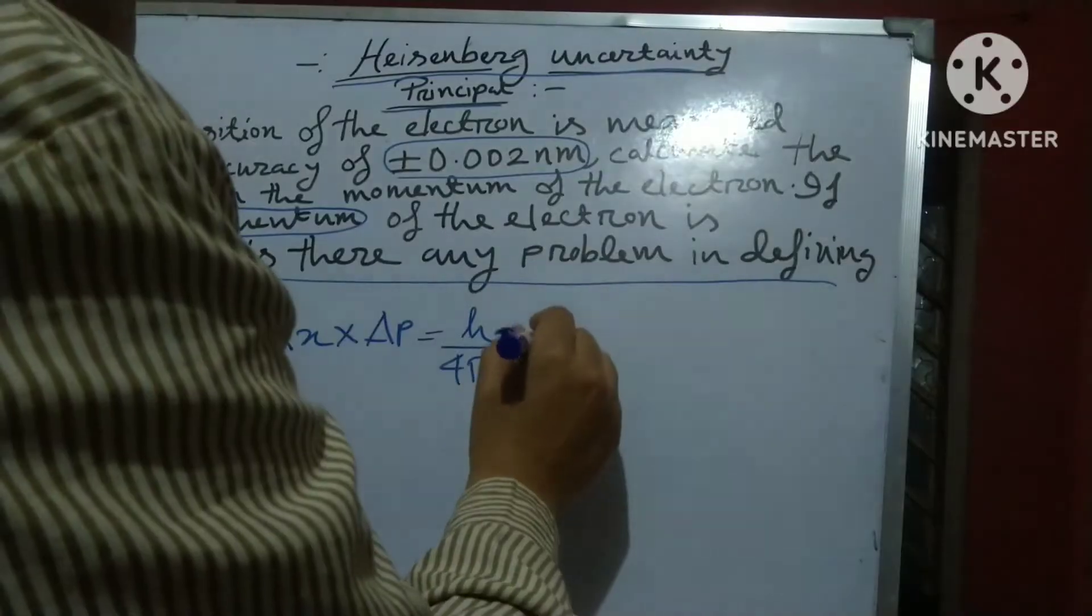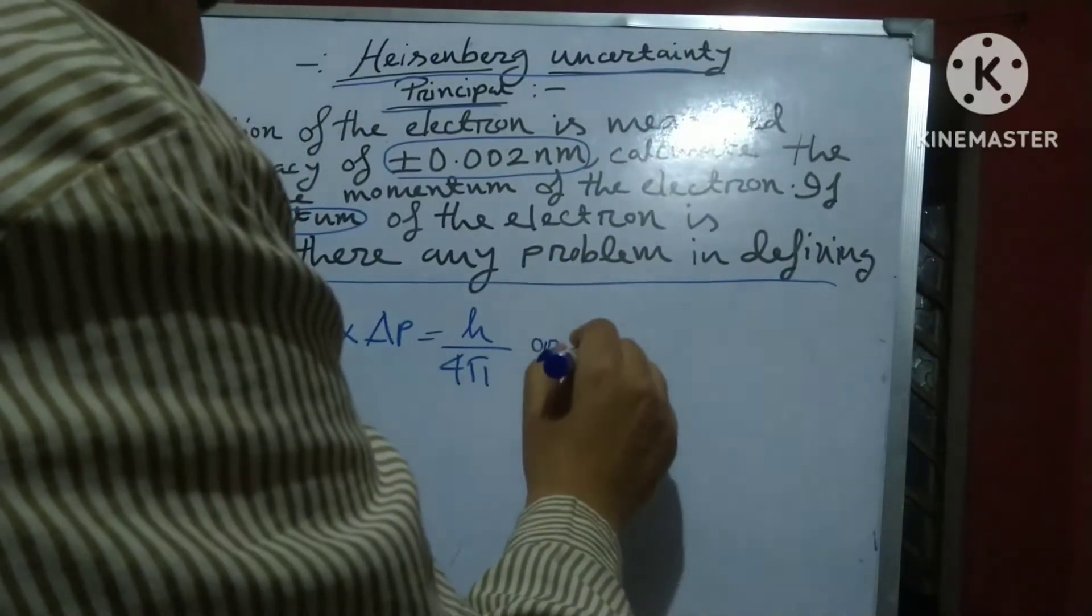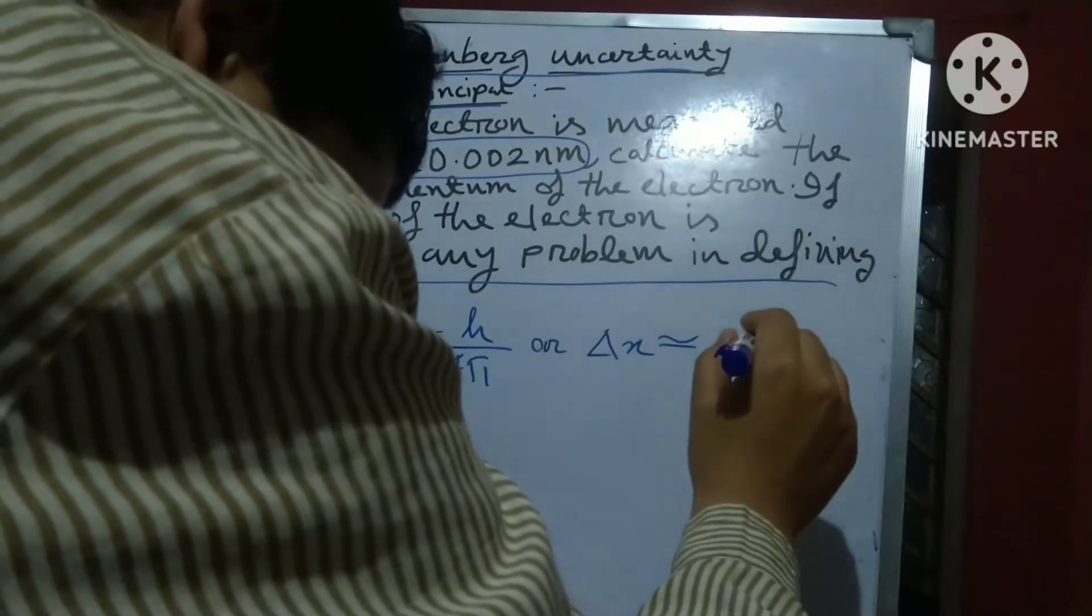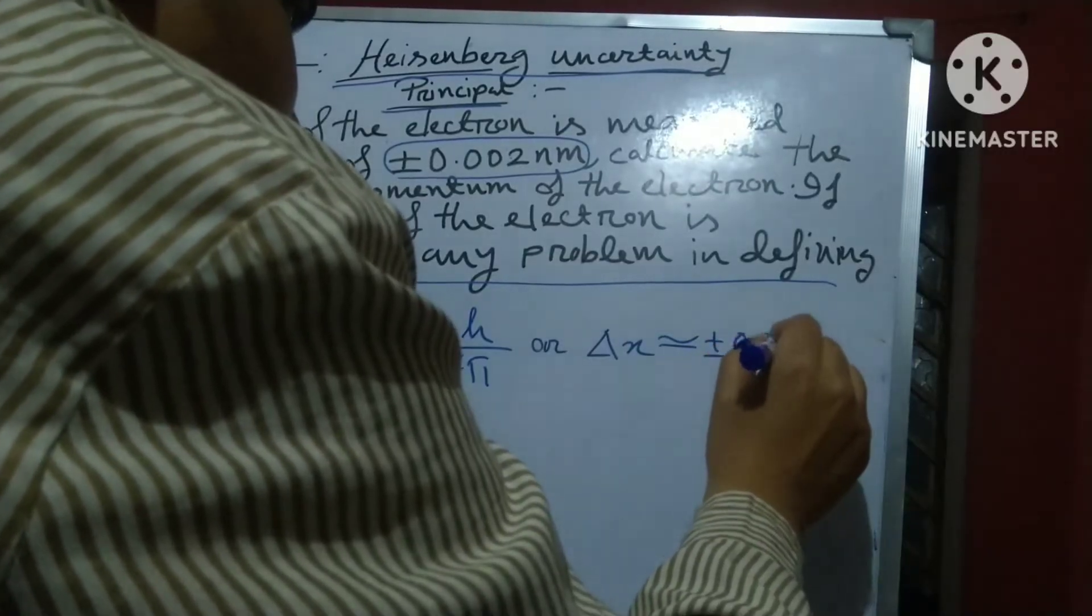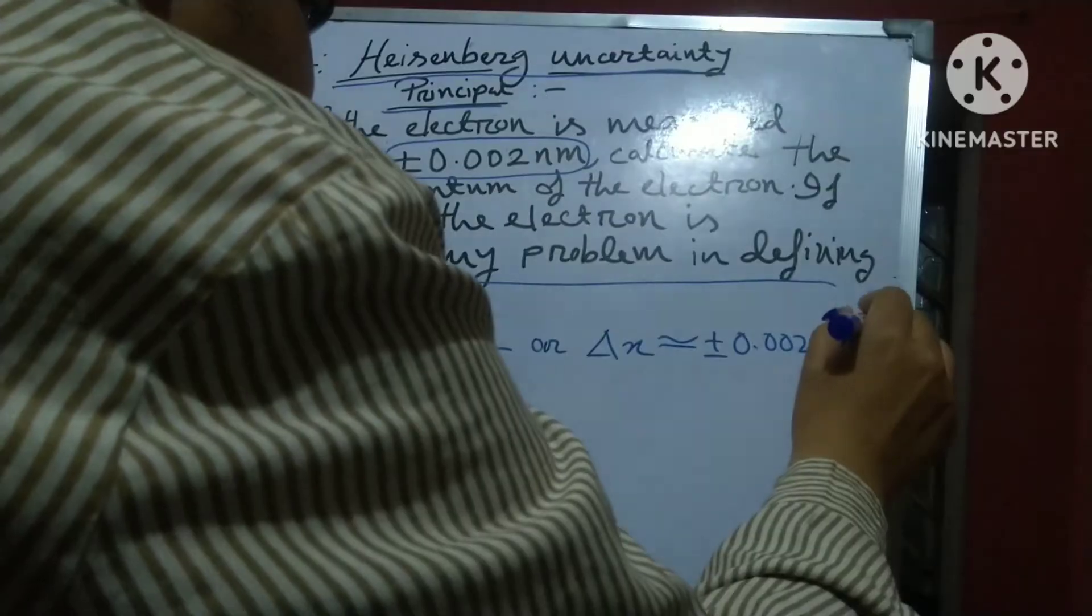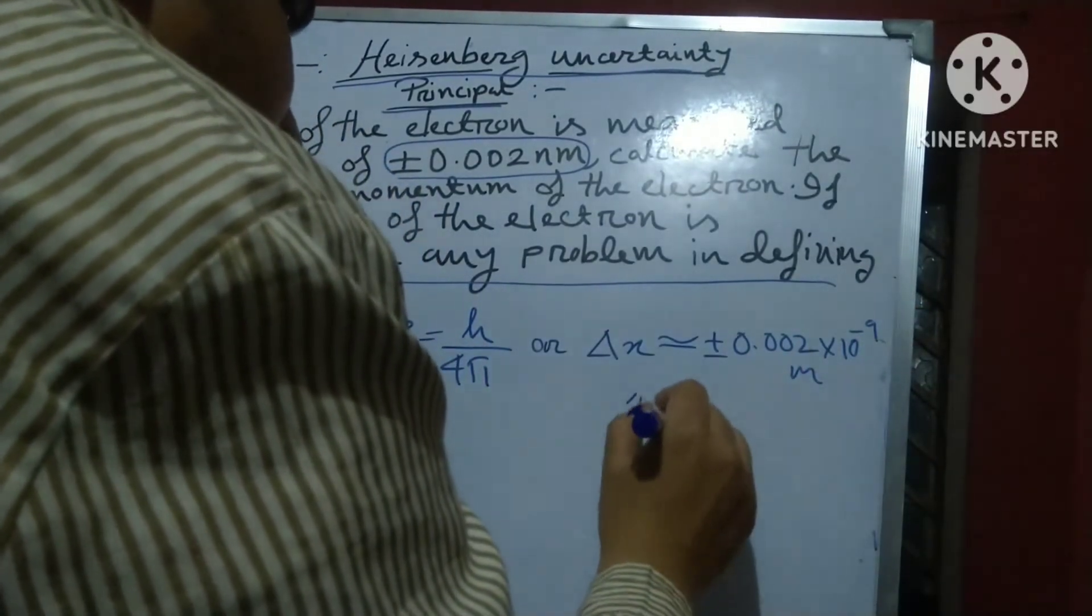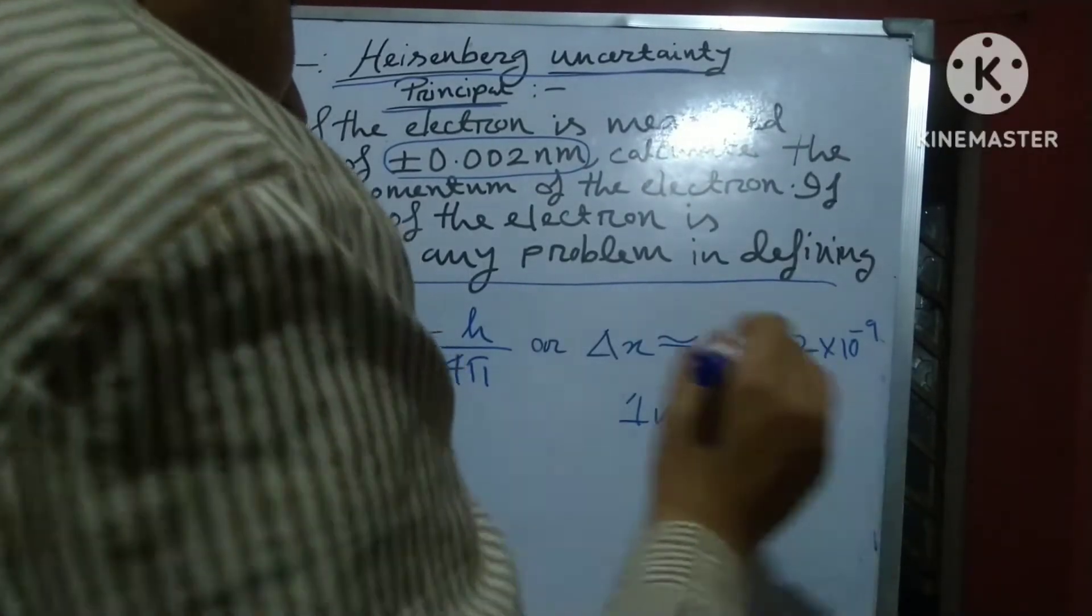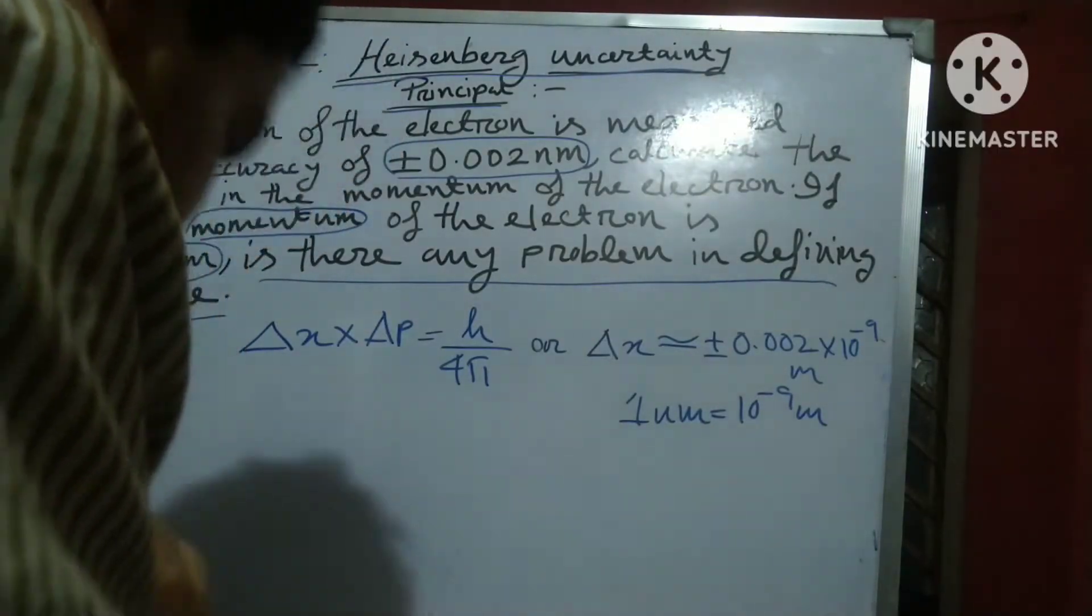So Δx is equivalent to ±0.0002 into 10 to the power minus 9 meter. 1 nanometer is equal to 10 to the power minus 9 meter. So here, I hope it is clear.